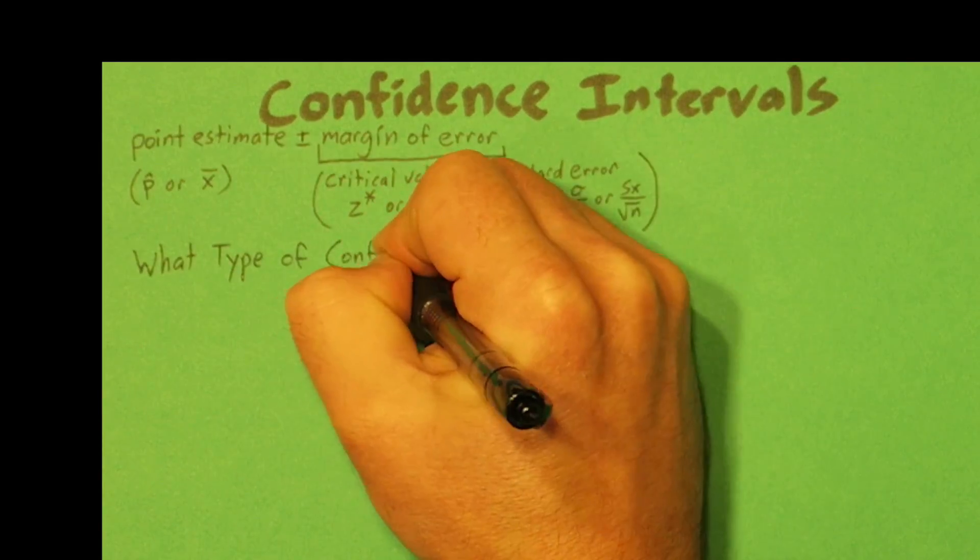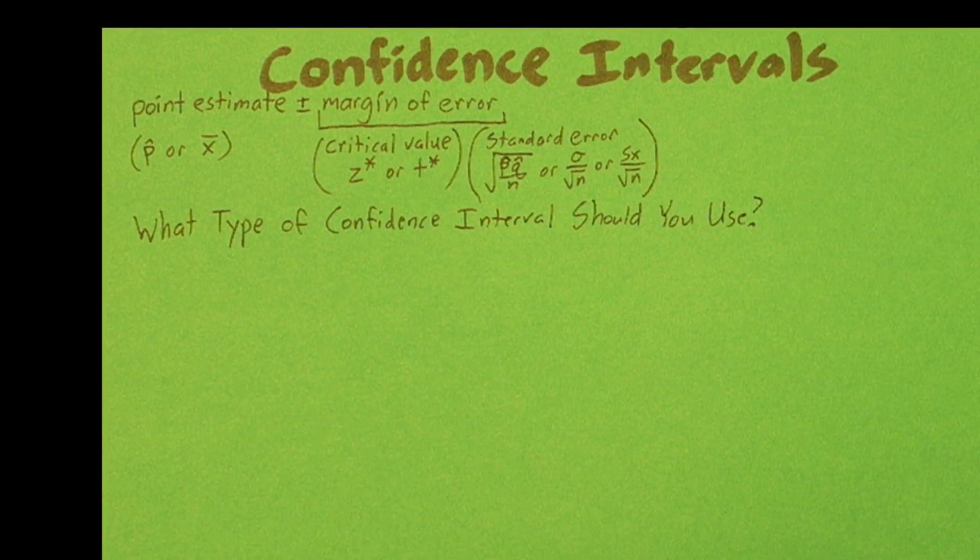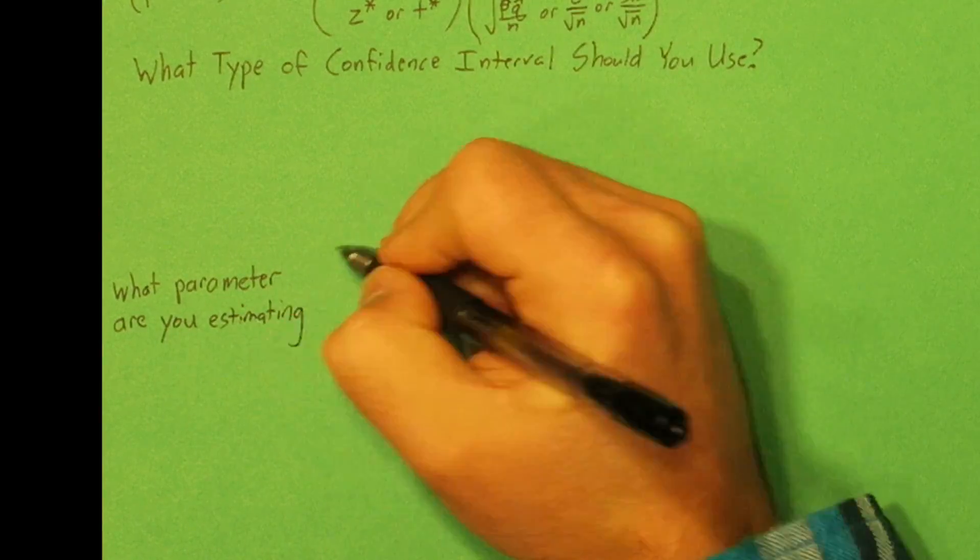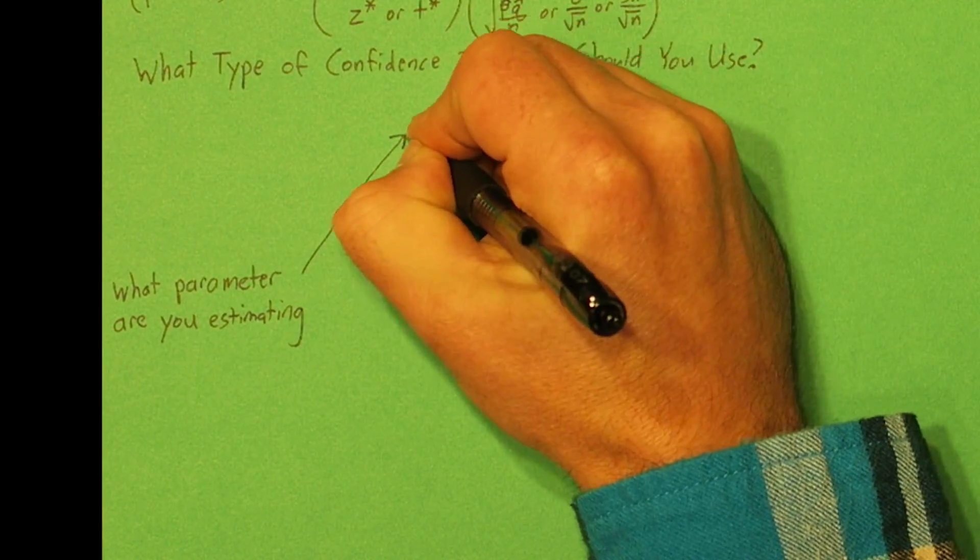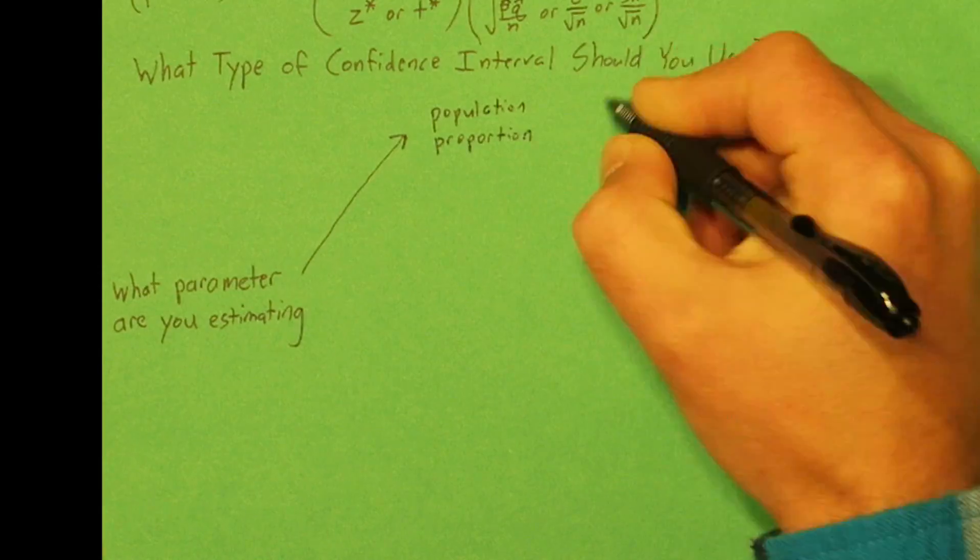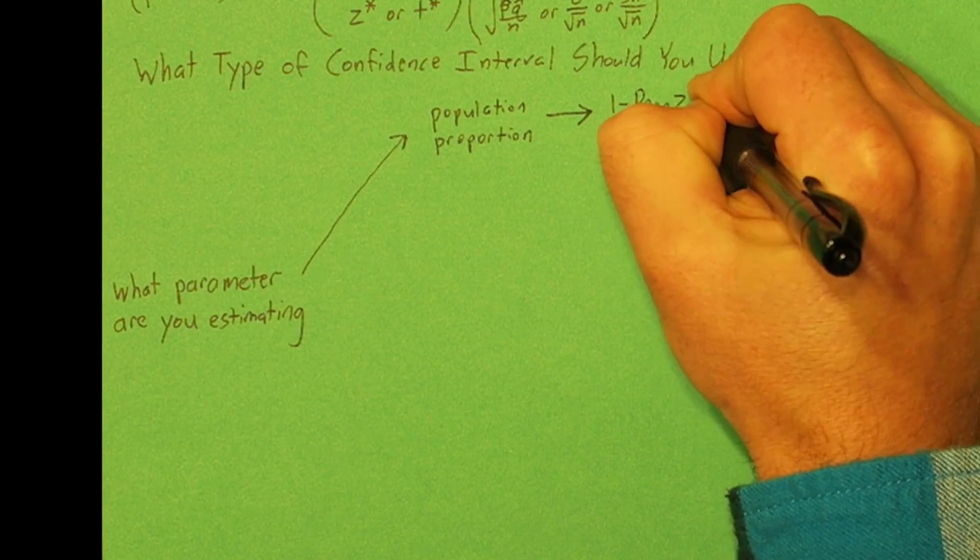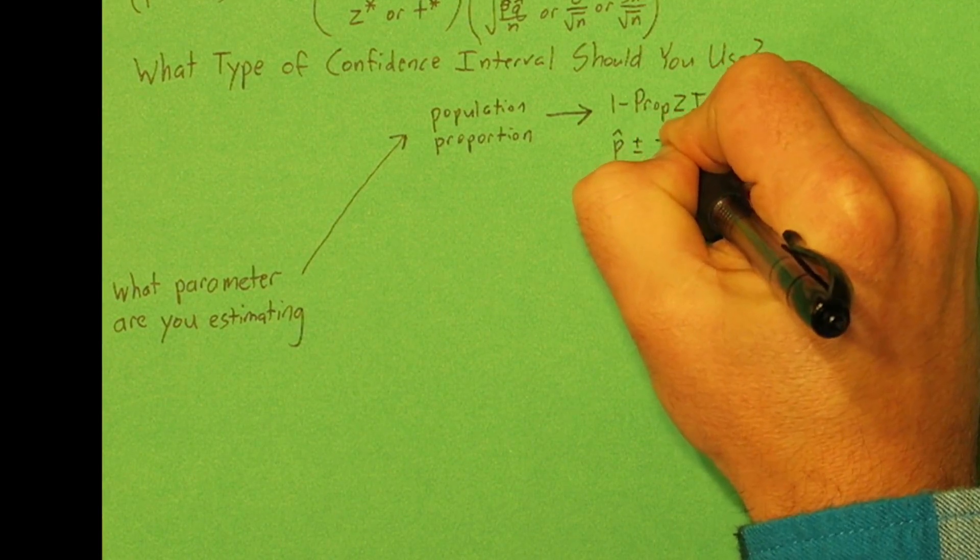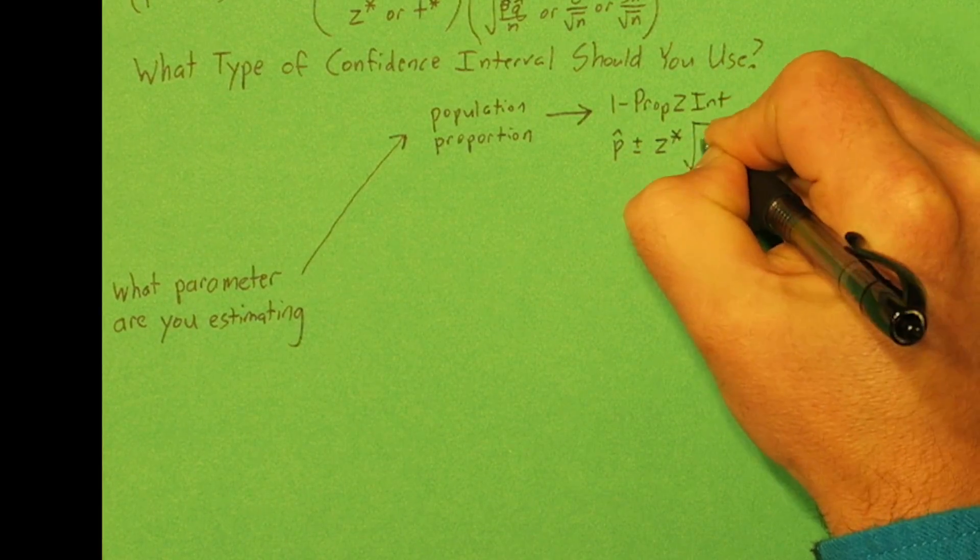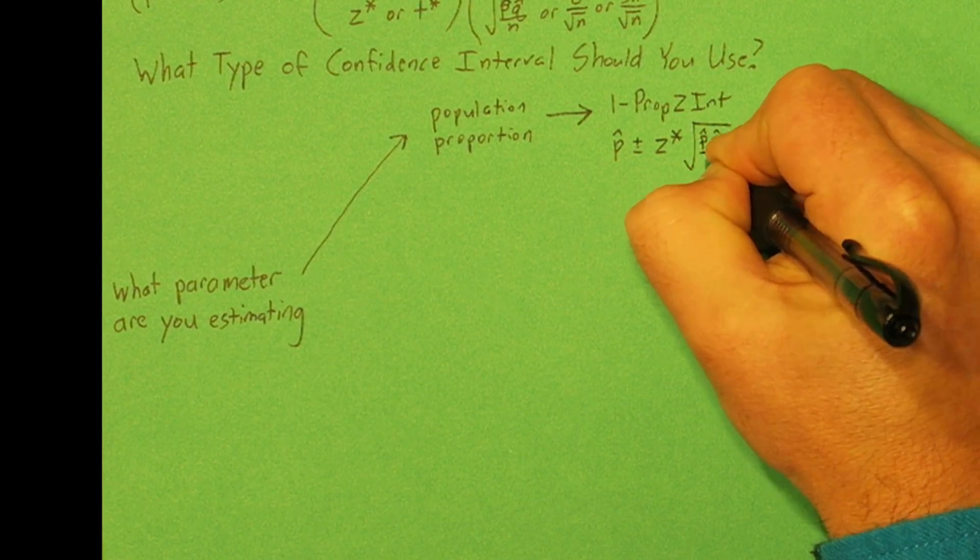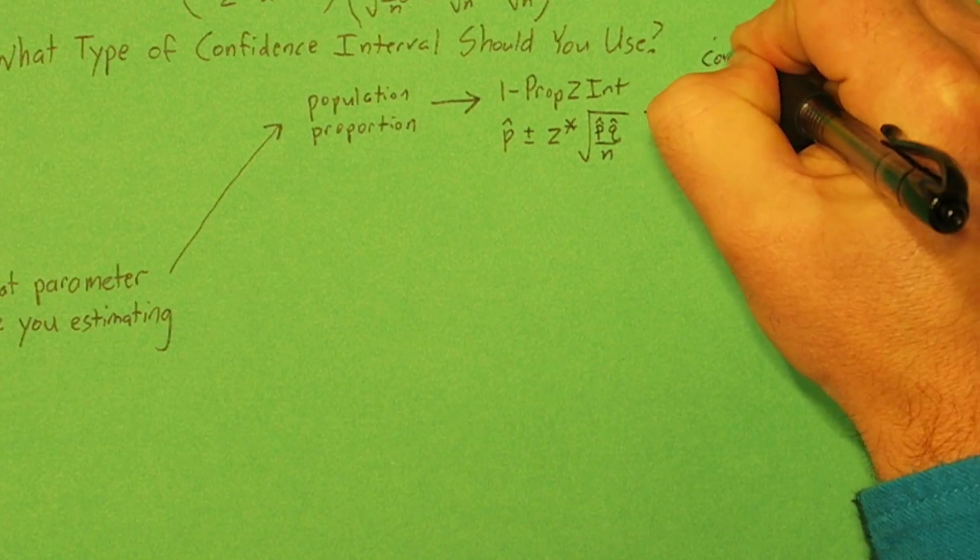So what type of confidence interval should you use? That depends on what parameter you're estimating. If you're estimating population proportion, you use a one proportion z interval. So that's p-hat plus or minus z star times the square root of p-hat q-hat over n. Now here's the conditions.